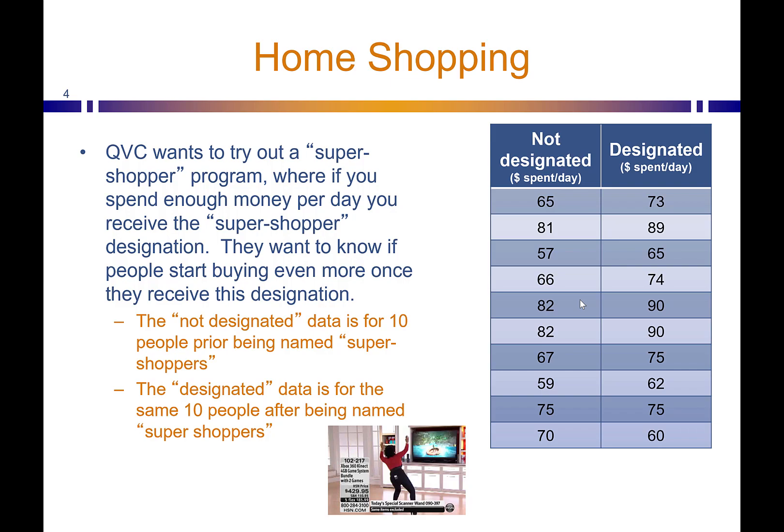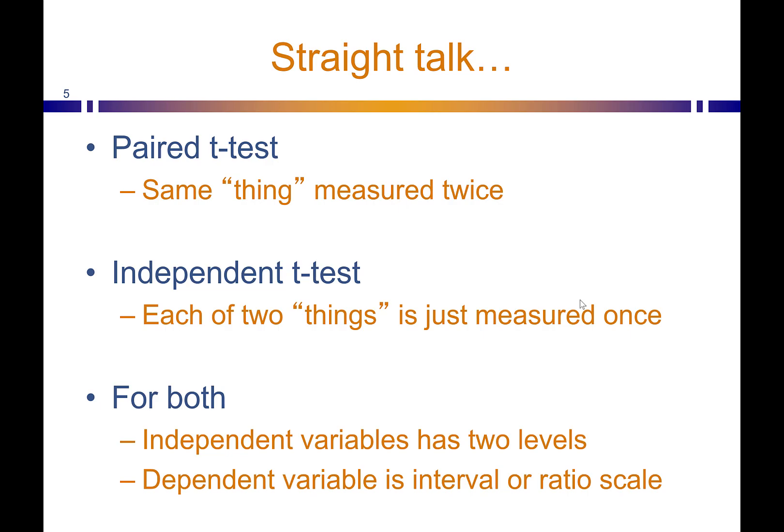What they've done is taken 10 people randomly selected and looked at how much they spent per day. Then they designated these folks as super shoppers and saw how much they spent after being named super shoppers. This is a paired t-test setup — the same 10 people are being measured twice: before they were super shoppers and after.